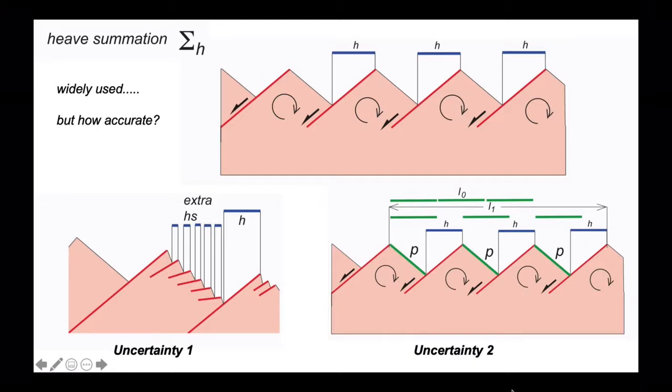The second is that if the fault blocks are rigid, then heave summation is inaccurate for determining L0. We need to be able to estimate the length of the tops of the fault blocks.